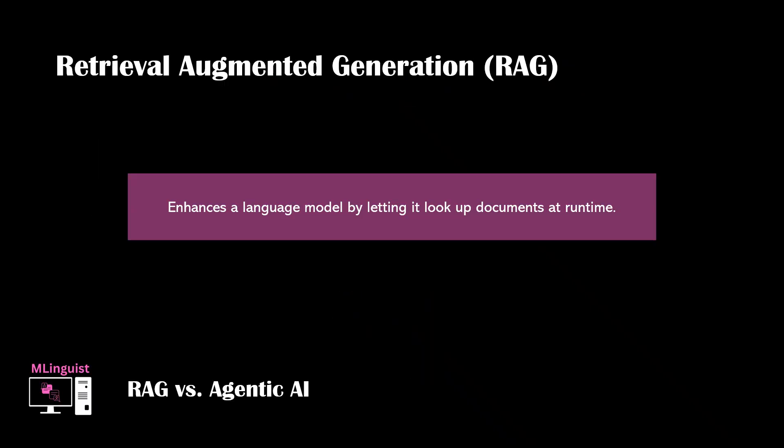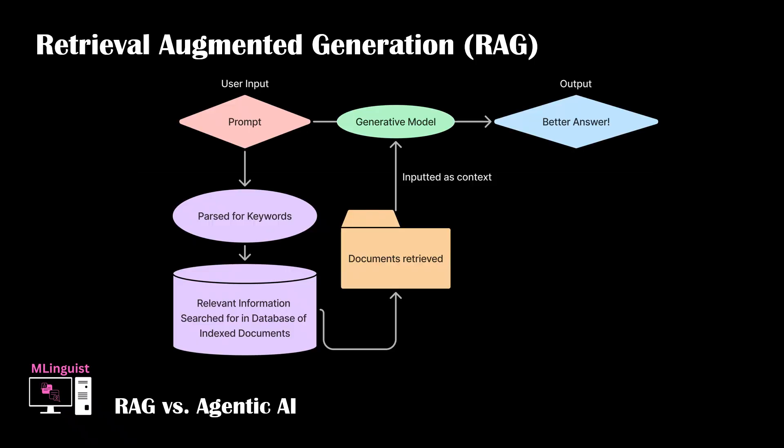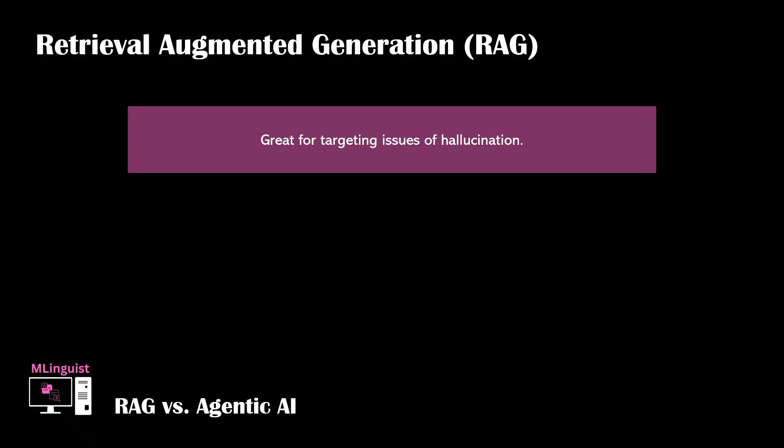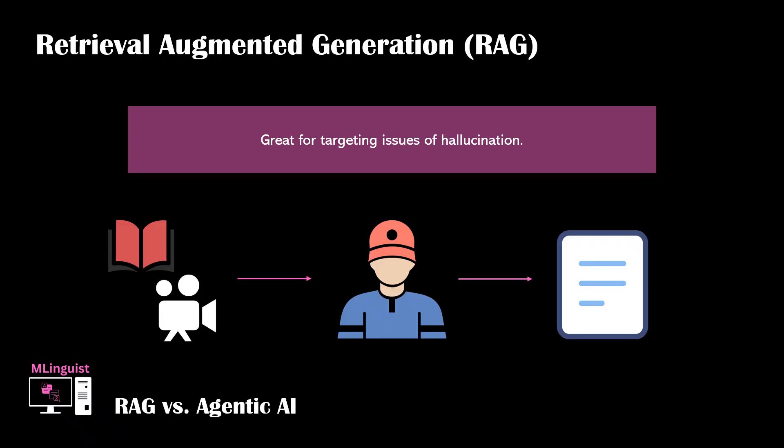RAG, short for Retrieval Augmented Generation, enhances a language model by letting it look up documents at runtime instead of relying solely on its pre-trained data. It retrieves relevant external text from databases or knowledge bases and feeds that into the model's prompt to generate more accurate and up-to-date responses. This approach is great for targeting hallucination in LLMs, since the model's responses are grounded in real evidence. Think of it like a student citing sources for a paper — we know the information is reliable due to citations to existing research or academic sources.